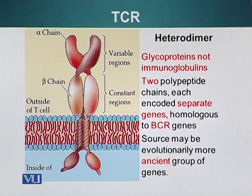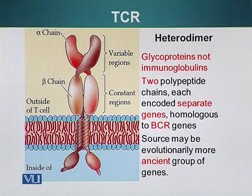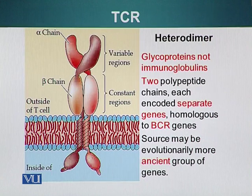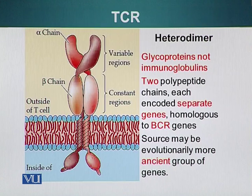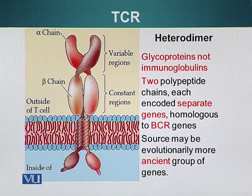Now let's look at the structure of the T cell receptor, abbreviated TCR. It's a heterodimer of alpha and beta chains. It is a glycoprotein, not an immunoglobulin primarily. The two polypeptide chains are each encoded by separate genes, which is homologous to the BCR or B cell receptor. This suggests that these proteins may have a common ancestor — some prototype gene which evolved into TCRs and BCRs that diverged at some point in evolution.